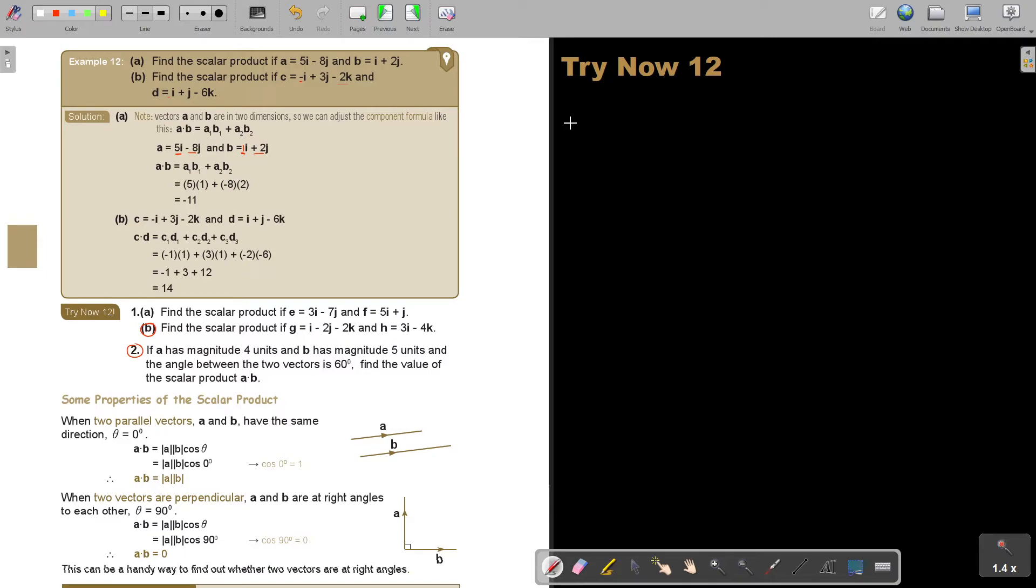Let's find number 1B. Find this guy. I'm first going to write it down. So, let's just look at number G. It's going to be I minus 2J minus 2K. And H, it's going to be 3I minus 4K. So, if I'm going to find the scalar product in this case, I'm just going to say, this is going to be GH. Remember, the dot is in the middle. And then, it's 1 times 3.